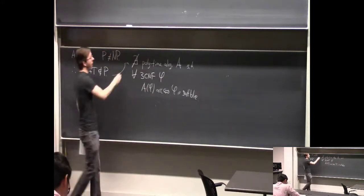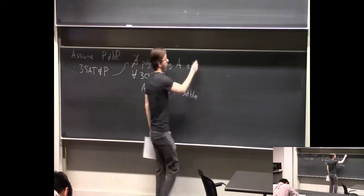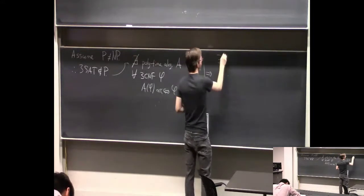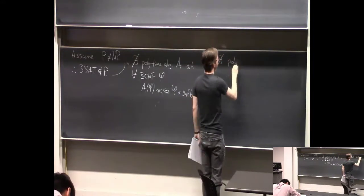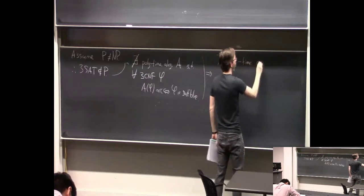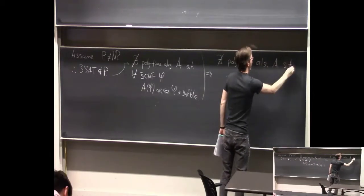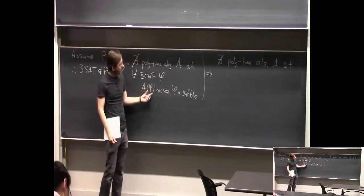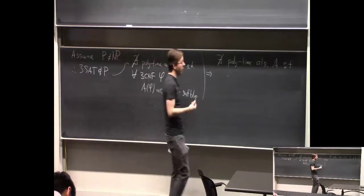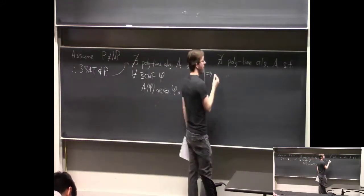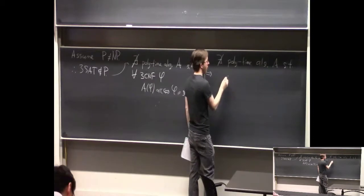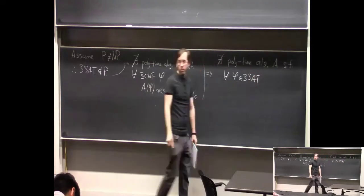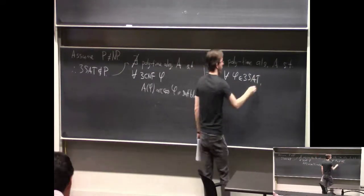Another way you can equivalently think about it is to say there does not exist a polynomial time algorithm A with the following property: instead of worrying about all 3CNF formulas getting the correct answer, you can just worry about what it does when the input is satisfiable, but with a stronger requirement — for all φ that are in the language 3SAT, meaning that actually are satisfiable, A(φ) outputs a satisfying assignment.